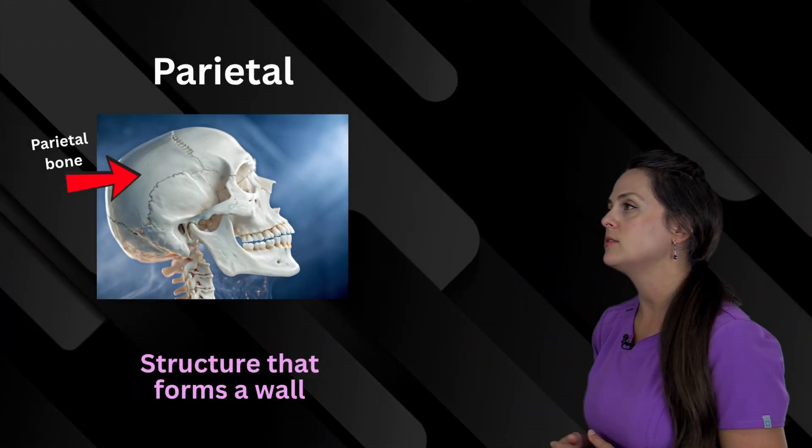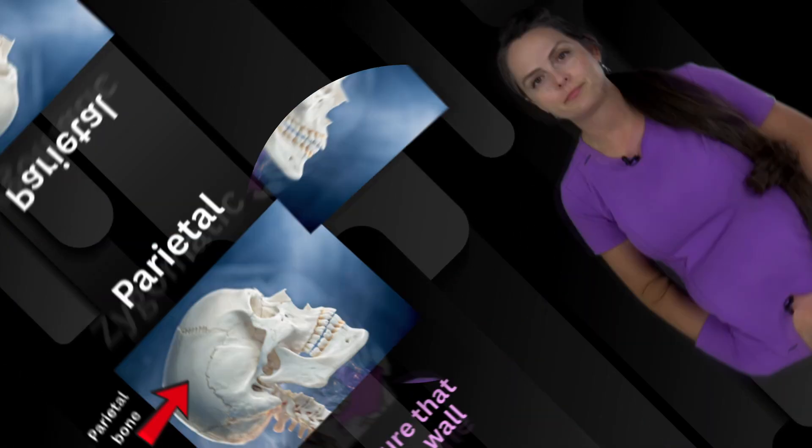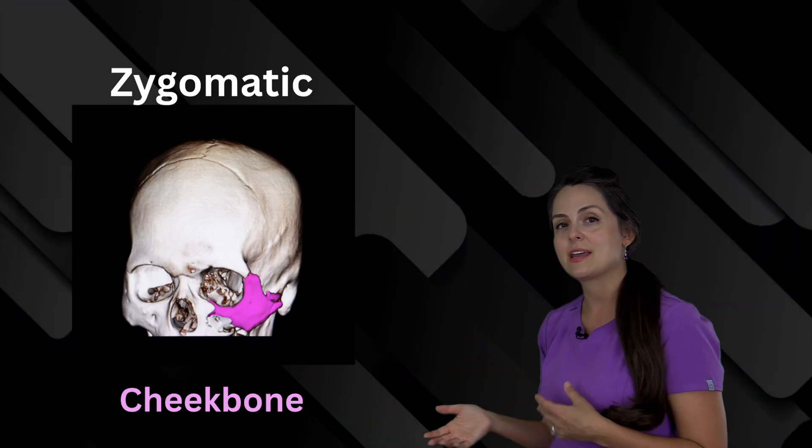This word is parietal, and it refers to the wall of a structure. Next is zygomatic, and all that means is we're talking about the cheekbone region.